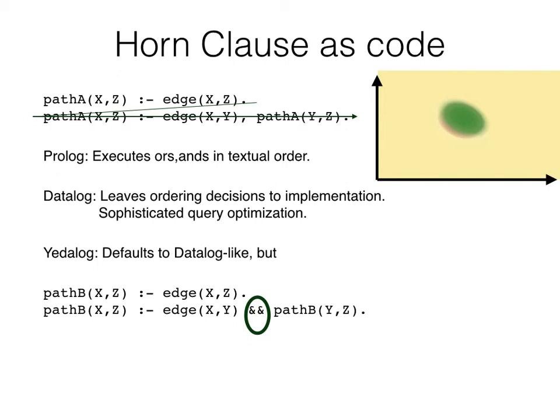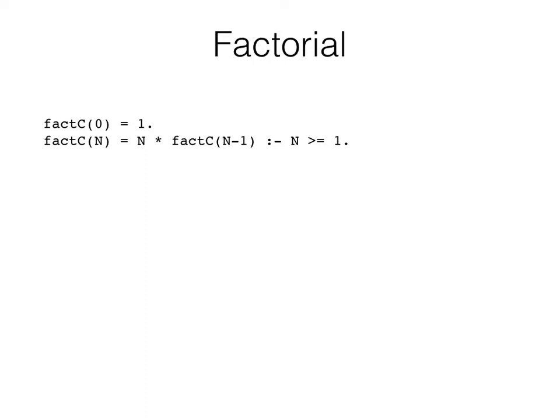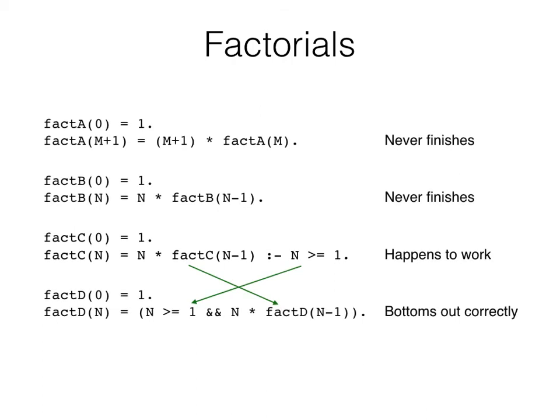When should Yetilog programmers use && and when should they use comma? If they use && when they could have used comma, they over-specify, denying the implementation optimization opportunities and wasting programmer time and machine resources. If they use comma when they needed &&, they under-specify and their program might not work. To find out what Yetilog programmers actually do, we asked them to write the simple recursive programming language 101 factorial program. This is what most of them wrote — mathematically a correct statement of factorial, but as code, does it successfully compute an answer?